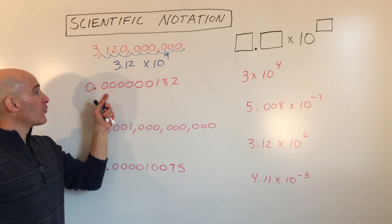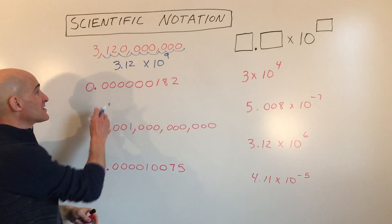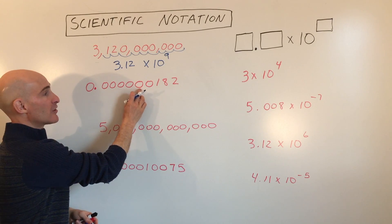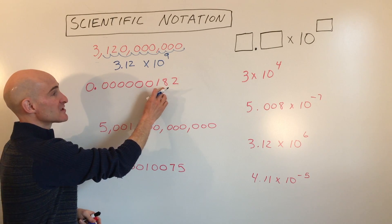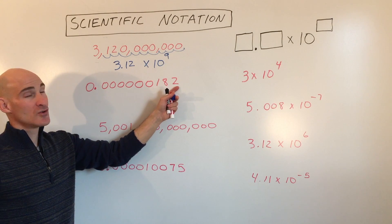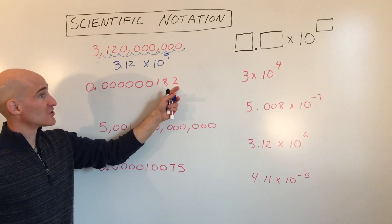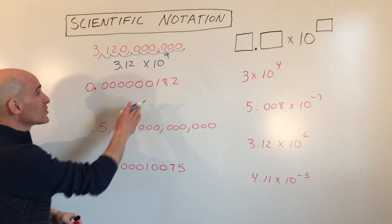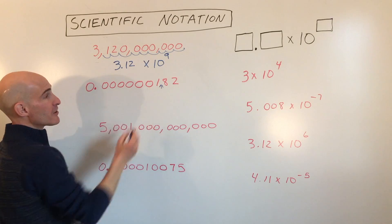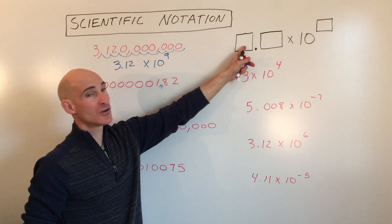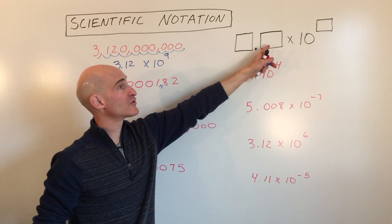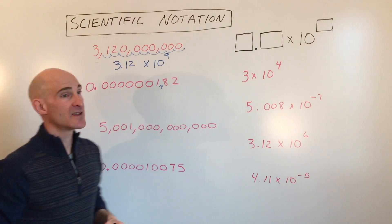The next problem has a really small number. This is the tenths, hundredths, thousandths, ten-thousandths, hundred-thousandths, millionths, ten-millionths, hundred-millionths, billionths. This is 182 billionths, which is a really small number. Again, we want the decimal point to end up so that we have a single non-zero digit in front of the decimal point and the other significant digits to the right of it.